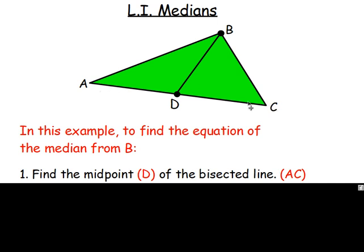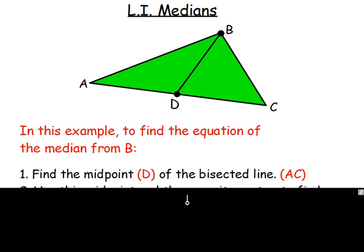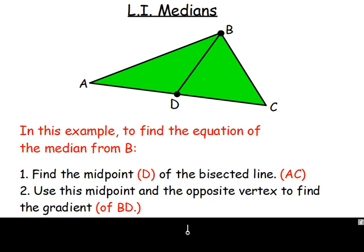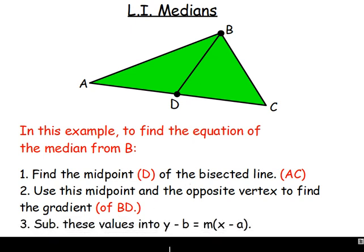After finding the midpoint, think: gradient point equation. You need the gradient, and to get the gradient you need two points. You know the vertices and you've worked out point D, so you can find the gradient of line BD. From there, substitute into y minus b equals m bracket x minus a to get the equation.